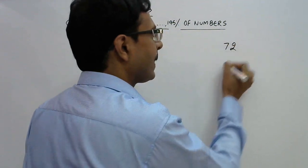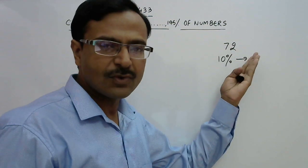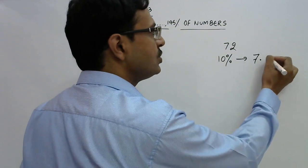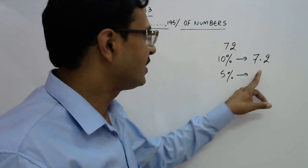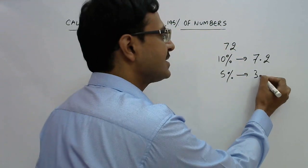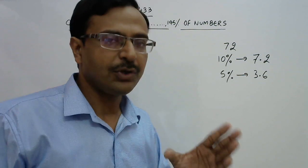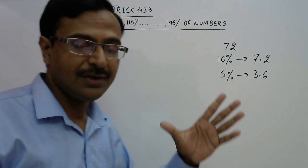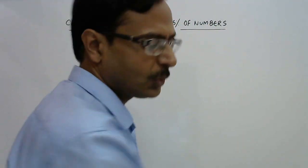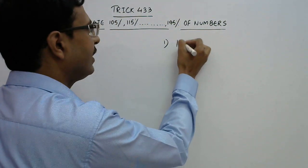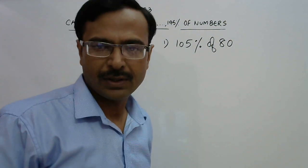For example, 10% of 72 is obtained by placing a decimal one digit from the right: 7.2. And 5% is half of 10%, so half of 7.2 is 3.6 — that is 5% of 72. This is enough to calculate all percentages ending in 5 beyond 100%. Let's take an example: 105% of 80.